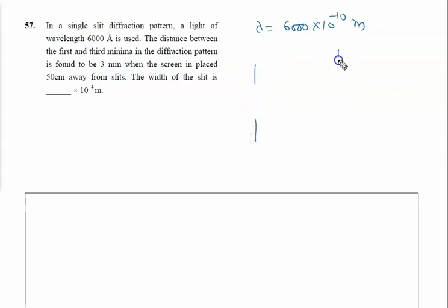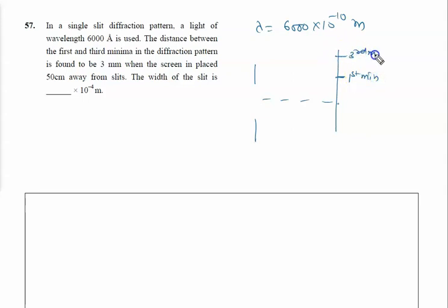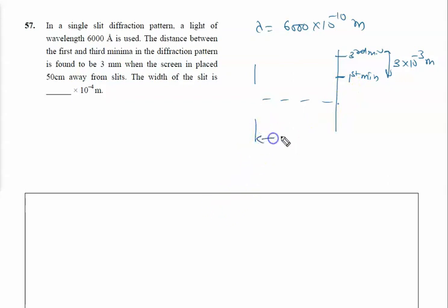Suppose this is a single slit and this is the central line. This is the first minima and this is the third minima, and the distance between them is given as 3 mm, that is 3 × 10⁻³ meter. The screen is placed 50 centimeters away from the slit. The width of the slit — that is d — is what we have to calculate.